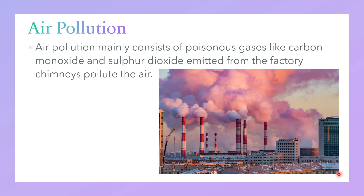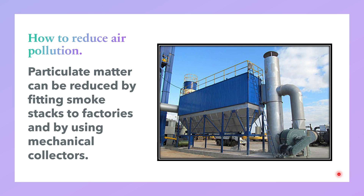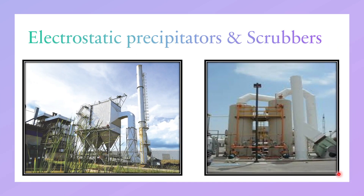Air pollution mainly consists of poisonous gases like carbon monoxide and sulfur dioxide emitted from the factory chimneys, which pollute the air extremely. Particulate matter in the air can be reduced by fitting smokestacks — which are very long chimneys — and also by using mechanical collectors like electrostatic precipitators, dust filters, and scrubbers. Smoke can be reduced by using oil or gas instead of coal in the factories.